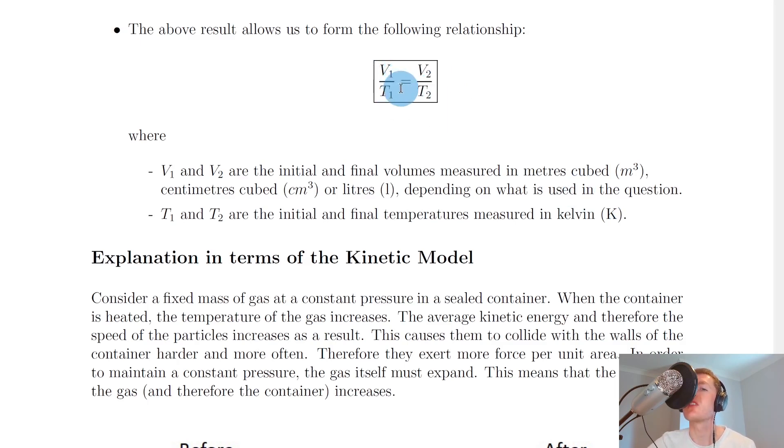But you'll notice I've included the subscripts ones and twos, because you're going to be dealing with questions which have initial and final volumes and also initial and final temperatures. So it will be one volume value changing to another value and one temperature value changing to another value. So we have here that V1 and V2 are the initial and final volumes measured in meters cubed, centimeters cubed or liters, depending on what is used in the question.